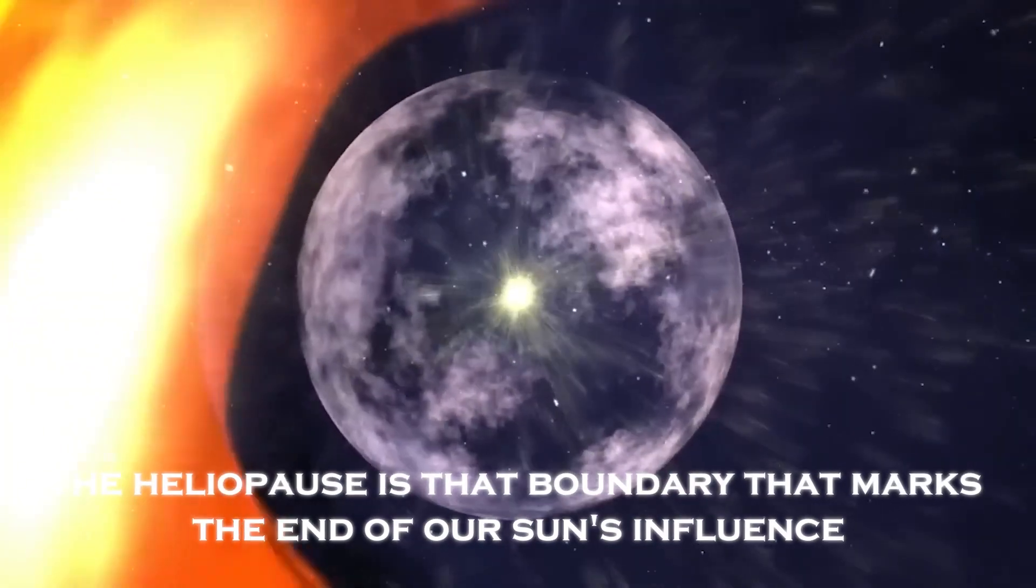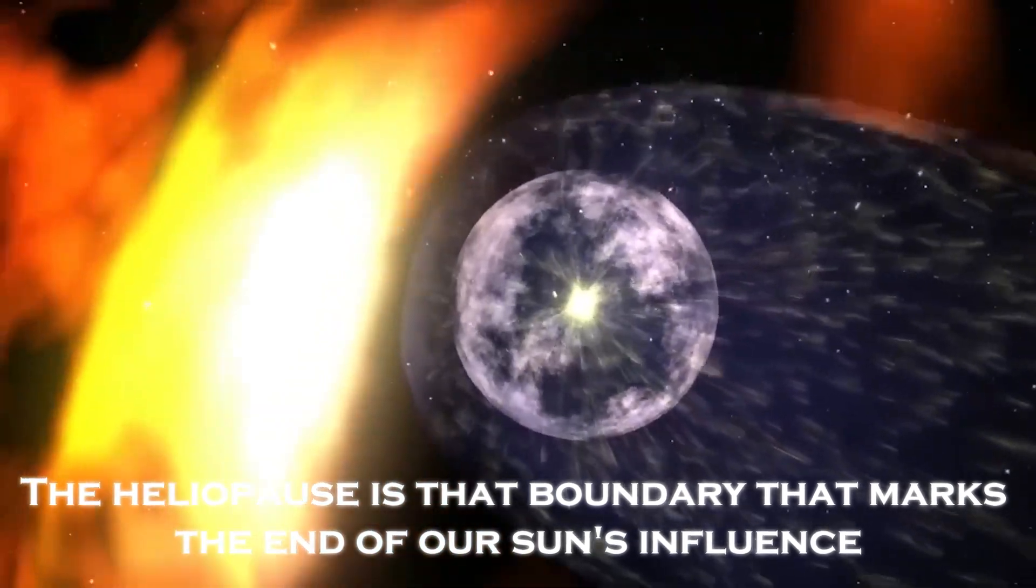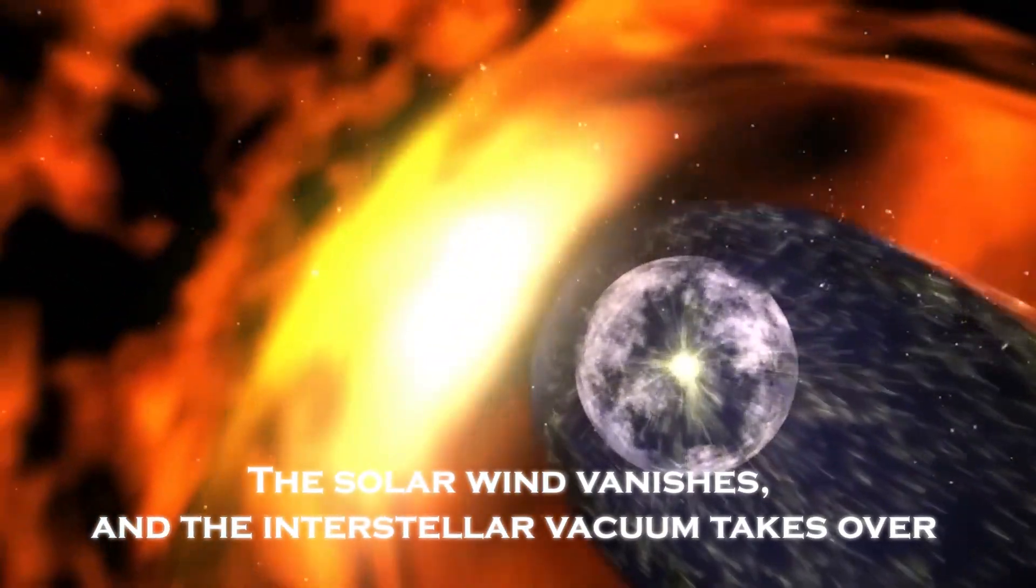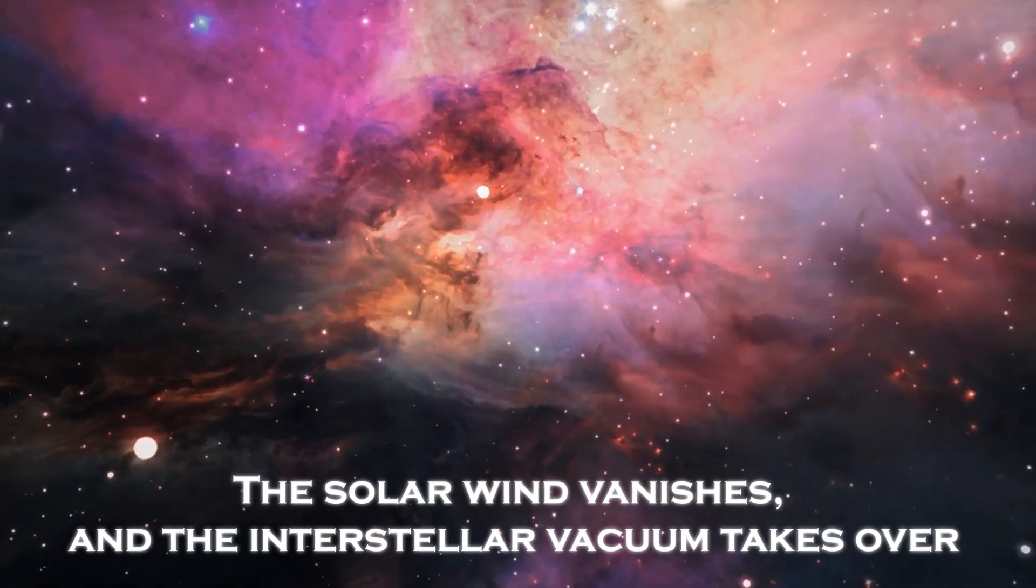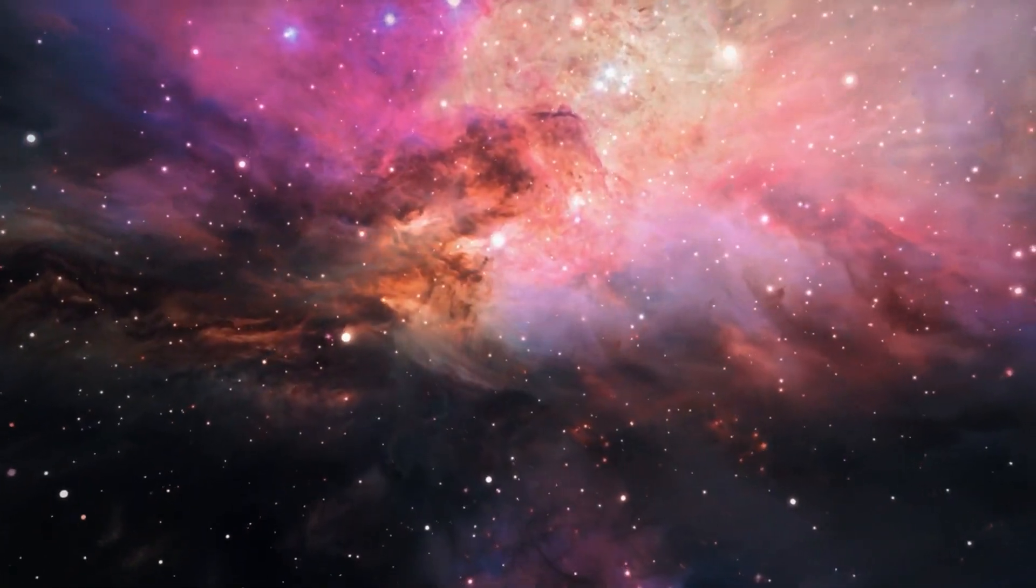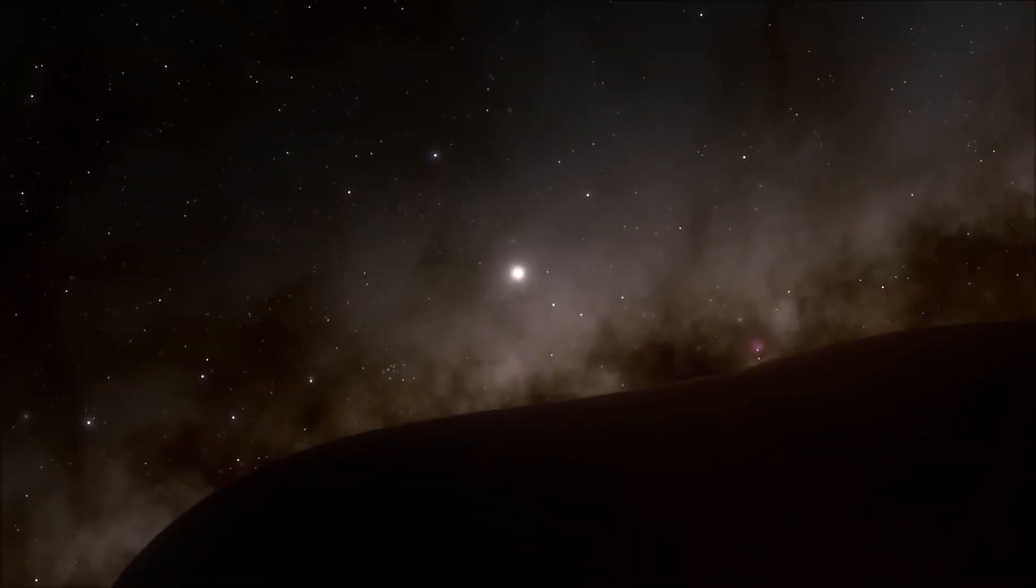The Heliopause is that boundary that marks the end of our sun's influence. Beyond this barrier, the solar wind vanishes and the interstellar vacuum takes over. But what does it really mean to cross this boundary? What lurks on the other side?